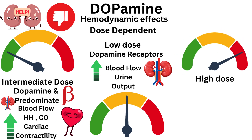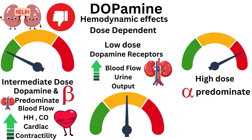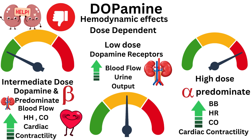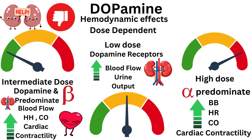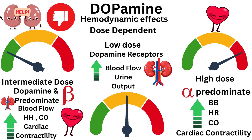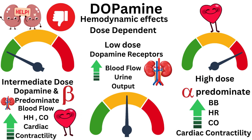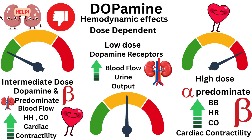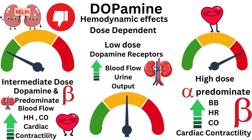For high-dose dopamine, alpha-adrenergic effects begin to predominate, resulting in vasoconstriction and increased blood pressure, in addition to increased heart rate, cardiac contractility, and cardiac output due to beta-adrenergic effects.